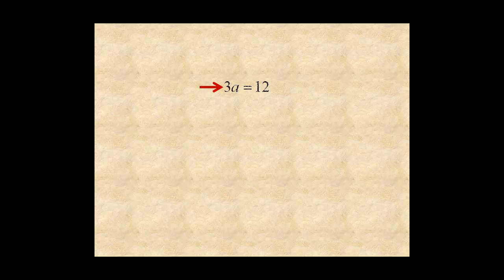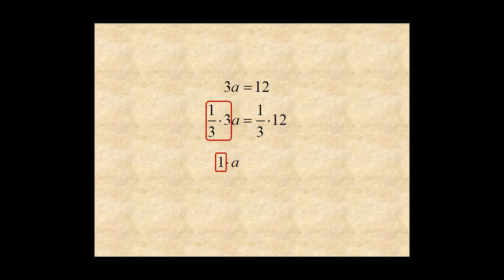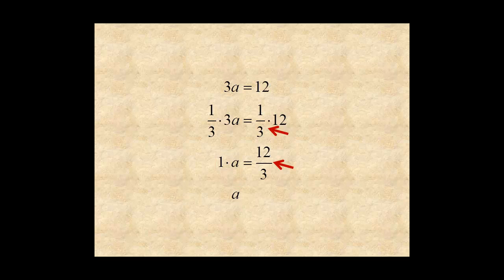Here's another example of using the inverse and identity properties to solve an equation. Begin by multiplying both sides by one third. The inverse property makes one third times three equal to one. And the identity property makes one times a equal to a. On the right side of the equation, one third times twelve is twelve over three, and twelve over three is four. So the inverse and identity properties of multiplication were used to isolate the variable and find the solution to the equation.